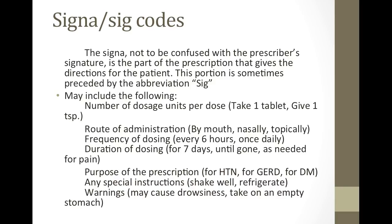The next part we'll talk about is the SIG codes, also known as the Signa. Don't confuse this with the prescriber signature because it has the same prefix. The SIG codes may include the following: the number of dosage units per dose, for example take one tablet or give one teaspoon; the route of administration; frequency of dosing; duration of dosing; the purpose of the prescription; any special instructions; and also warnings.